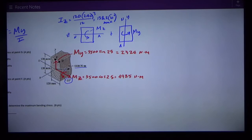I can do the same thing with Iy. The base in that case is 240, the height 120, cubed, divided by 12 and I get 34.56 × 10⁶ millimeters to the fourth.